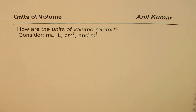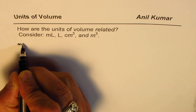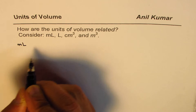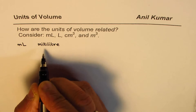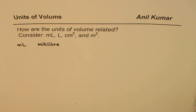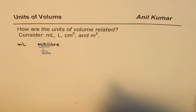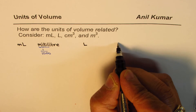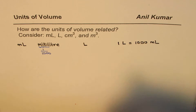Let us see how they are related. Let me begin with milliliter and liter. Milliliter — always written with a lowercase 'm' — means one over one thousand, so it is used for items with very small capacity. Liter is for bigger items. Their relation is that one liter equals one thousand milliliters.